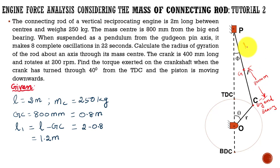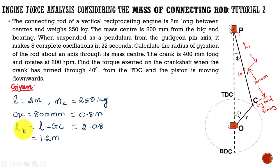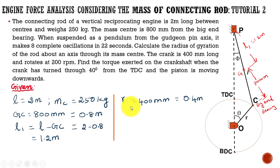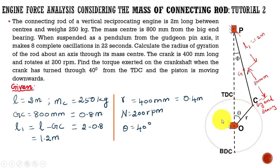L1 is the distance from the gudgeon pin to the mass center. To find L1, we subtract 800 mm from the length of the connecting rod: L1 = L − Gc = 2 − 0.8 = 1.2 meters. The radius of the crank is 0.4 meters, the speed of the crank is 200 rpm, and theta, the angle turned from top dead center, is 40 degrees.